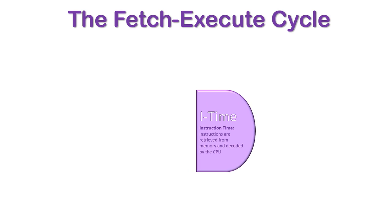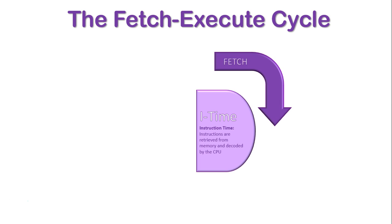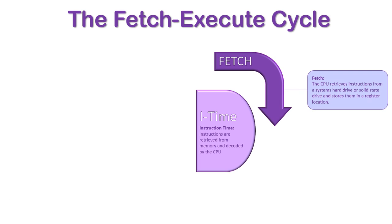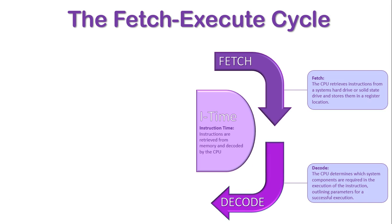Let's look at this graphically. We start off with our I-Time, our Instruction Time, which is basically getting the data from memory and decoding it. So we fetch and get the data, then decode the data and get the instructions prepared for what parts of the computer are going to be necessary in order to execute.